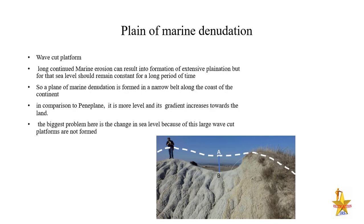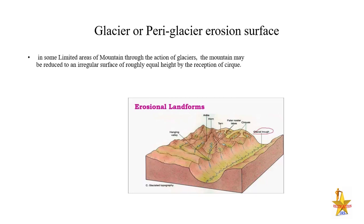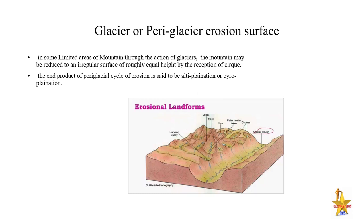The biggest problem with marine denudation is that sea level keeps changing. Next is glacial erosion, where the same process applies. We have already discussed glacial landforms like arêtes, cirques, and drumlins. In limited areas — polar regions and high altitude mountain areas — the effect of glaciation is very strong and mountains may be reduced to an irregular surface. The end product is called cryoplanation or altiplanation — prepare a short note on these as they are untouched areas needing attention.